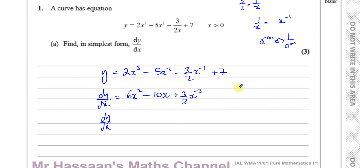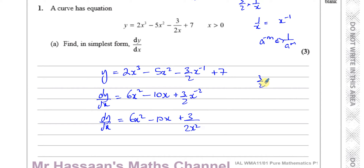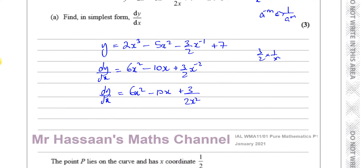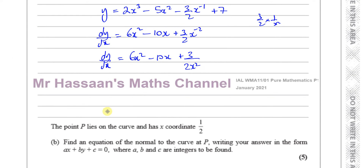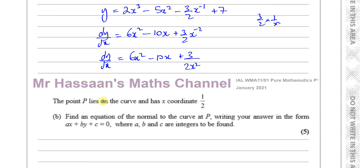That gives us the gradient function. I could leave it as 6x² minus 10x plus 3 over 2 · x^(−2) and get full marks, but I'll also write the x^(−2) term as 3 over 2x² — that's 3 over 2 times 1 over x², which is 3 over 2x². This form is more useful when substituting values in. So dy/dx equals 6x² minus 10x plus 3 over 2x².